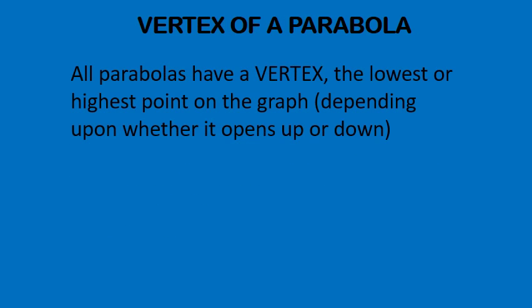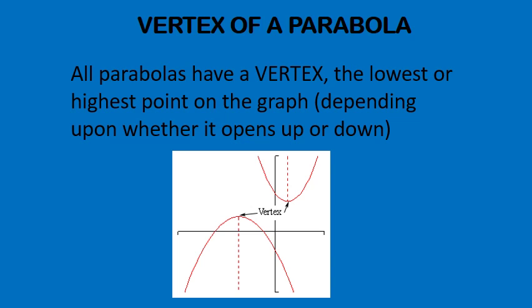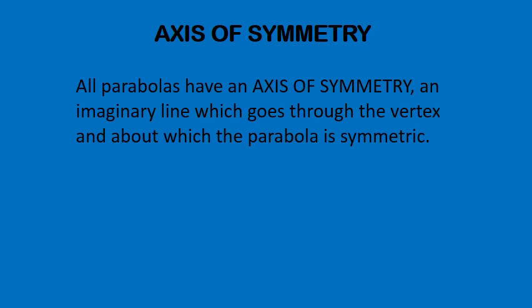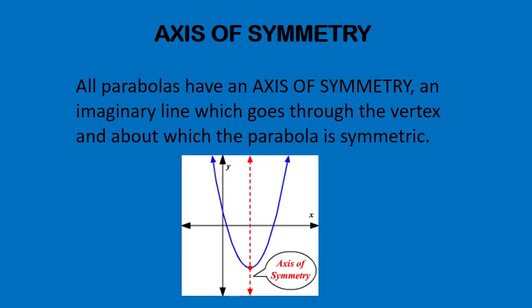So the vertex of a parabola is going to appear either at the top or the bottom. It's going to be maximum and it's going to depend on which way our parabola opens. Our axis of symmetry is simply going to be a line that cuts our parabola in half, leaving mirrored images on both sides.